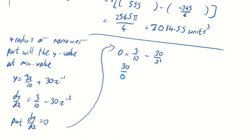So 0 is equal to 3 over 10 minus 30 over x squared. Just makes it a bit easier when you take it out of index form just to do this next bit. And a bit of cross-multiplying. 300 is equal to 3x squared,